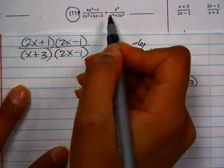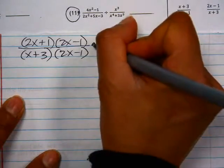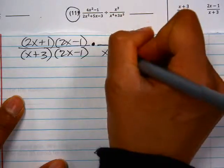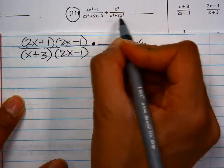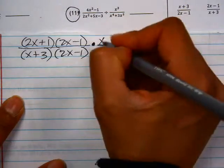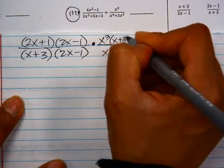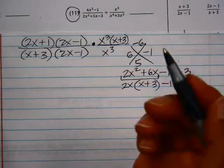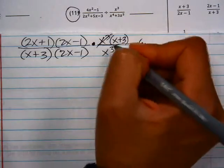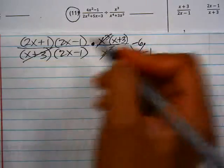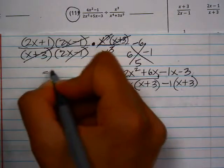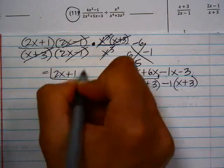It's divided by this, but I'm going to change it to times the reciprocal. So the x cubed will go on the bottom. This has a common factor of x cubed, so I'll take that out. And then we're left with x plus 3. Now that everything's factored, we can cancel common factors. So the x cubed's are common, the x plus 3's are common, and the 2x minus 1's. So you're left with 2x plus 1.